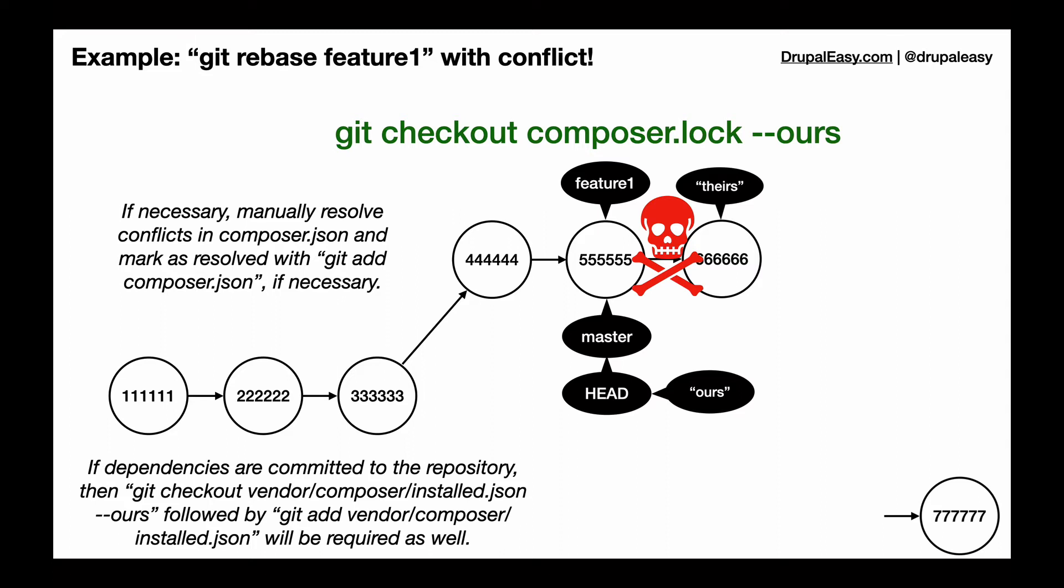When you're doing a rebase, ours is always following where HEAD is. So in this case, ours refers to the feature one branch where theirs would refer to the original master branch. So when you do a git checkout composer.lock --ours, we're actually choosing the version of the composer.lock that was part of the feature one branch. In most cases, it doesn't matter which one you choose. Generally, as a rule of thumb, pick the composer.lock file that has the most changes.